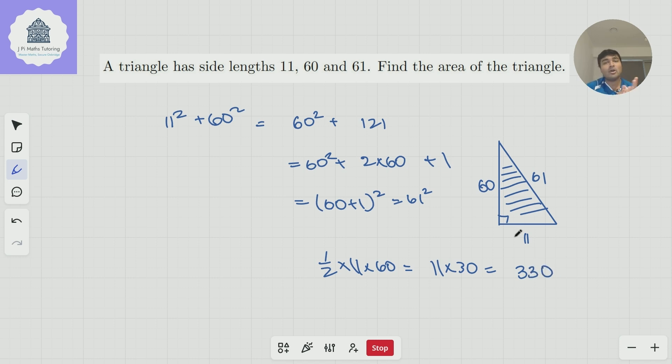So the area of this triangle would be 330, using, or from making the observation that it's a right-angled triangle. So I didn't need to use Heron's formula, could have used Heron's formula, and if I'd spent months and months practicing and I knew Heron's formula inside out, I could absolutely apply it here. But you don't need to.